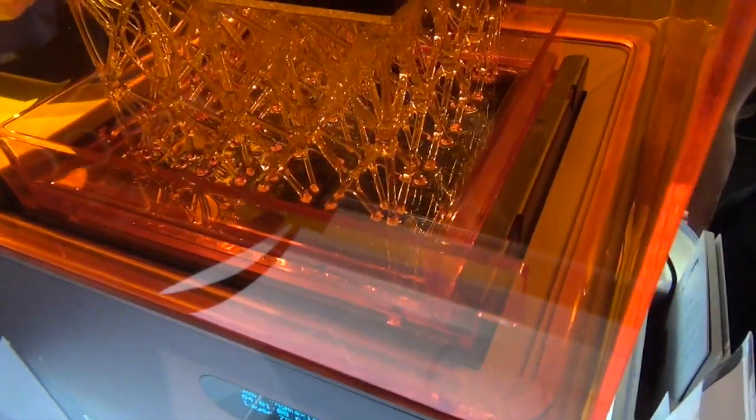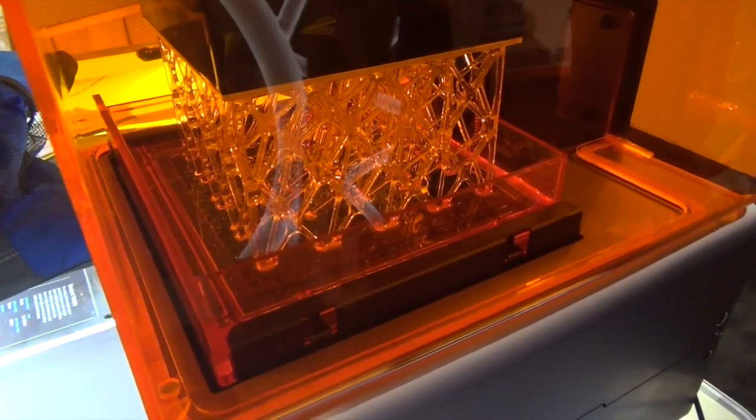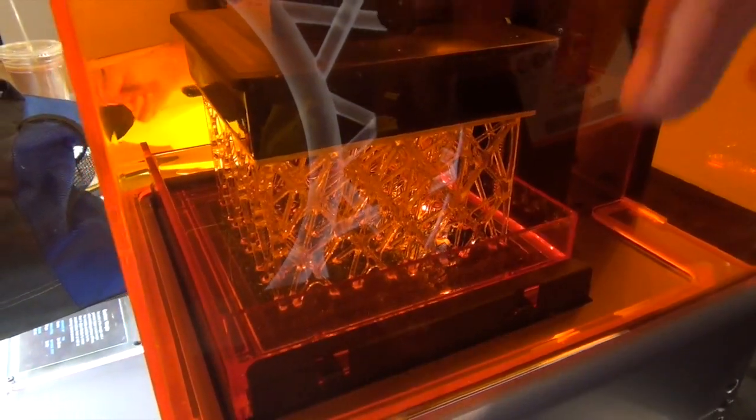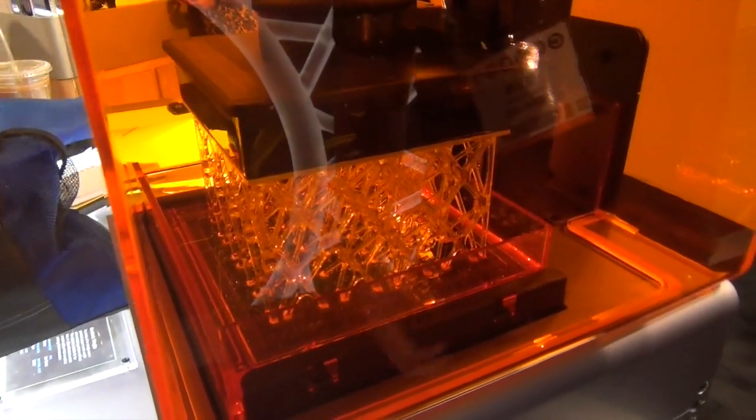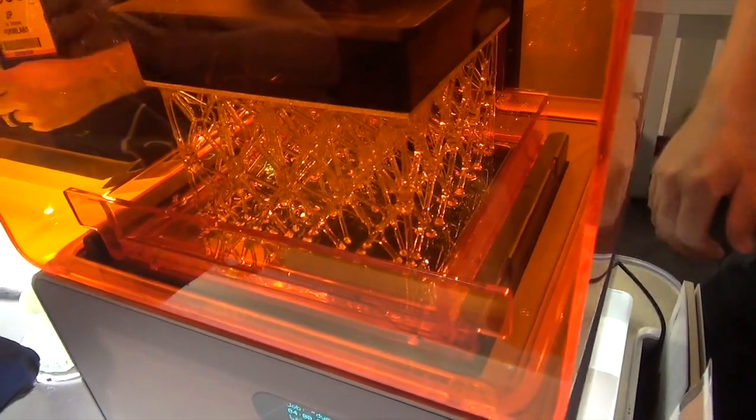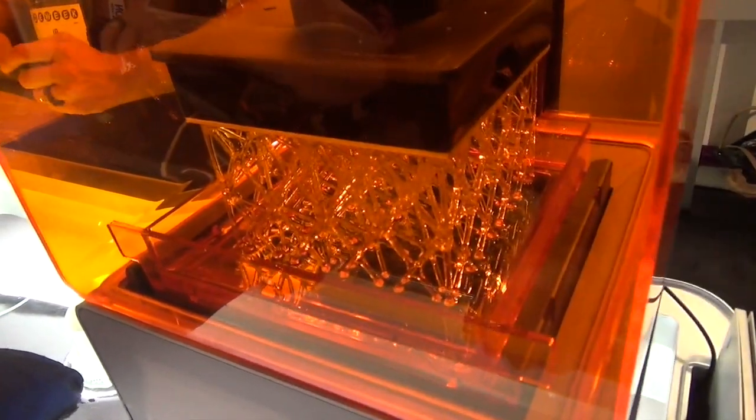What are you making right now? We're making a model that shows the full build volume of the printer. That's as big as it can go. Yep. That'll, as the day goes on, that'll keep pulling out of the bed here and eventually we'll have a model that's the biggest size the printer can print. I see that it's dipping, going down and it comes back up. What's it doing when it does that?